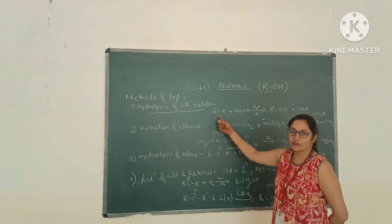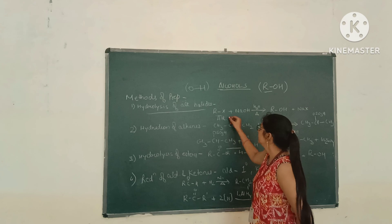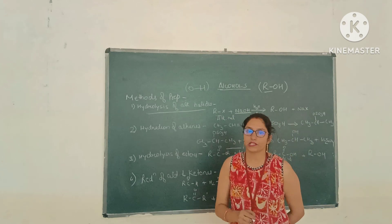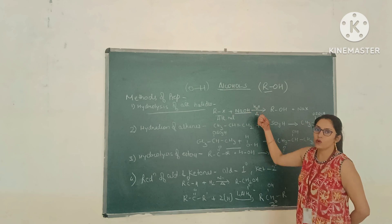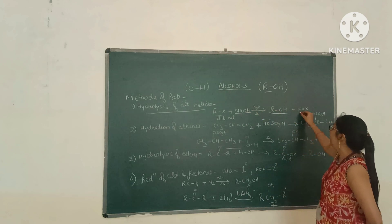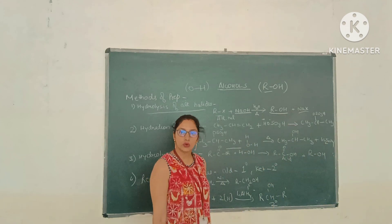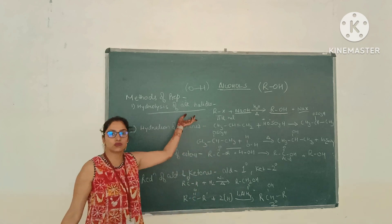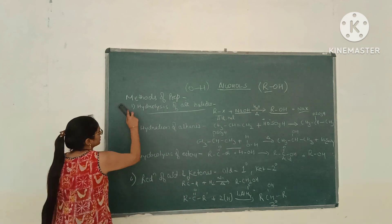For this reaction, we take alkyl halide and add aqueous NaOH (sodium hydroxide) with heat, then we will get alcohol and sodium halide. So the first method of preparation is from alkyl halides — we hydrolyze the alkyl halide and we will get alcohols.